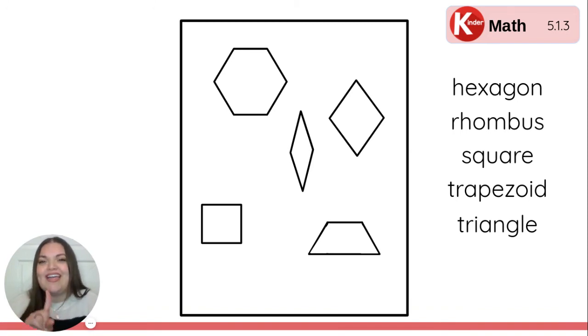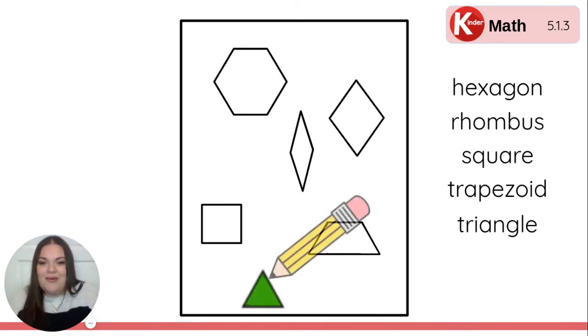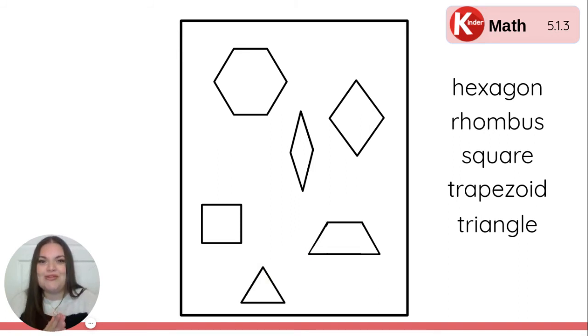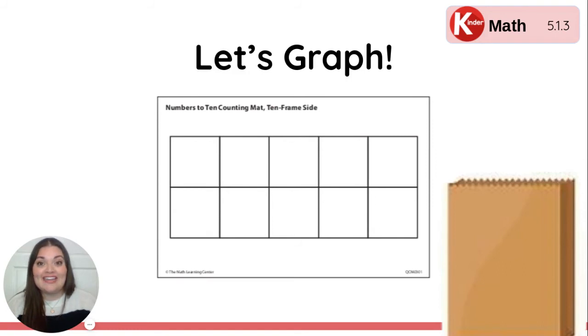Now, we need to add one last shape to our paper. Grab your teeny tiny triangle. Find a good spot for your triangle. Hold it down with one hand and trace around. Yes. Say, this is a triangle. It has three sides. Excellent. There is your beautiful shape paper today. Great job tracing. Push your paper and your pencil off to the side. Get your Numbers to 10 counting mat ready. Set it right in front of you and keep all your pattern blocks close by.